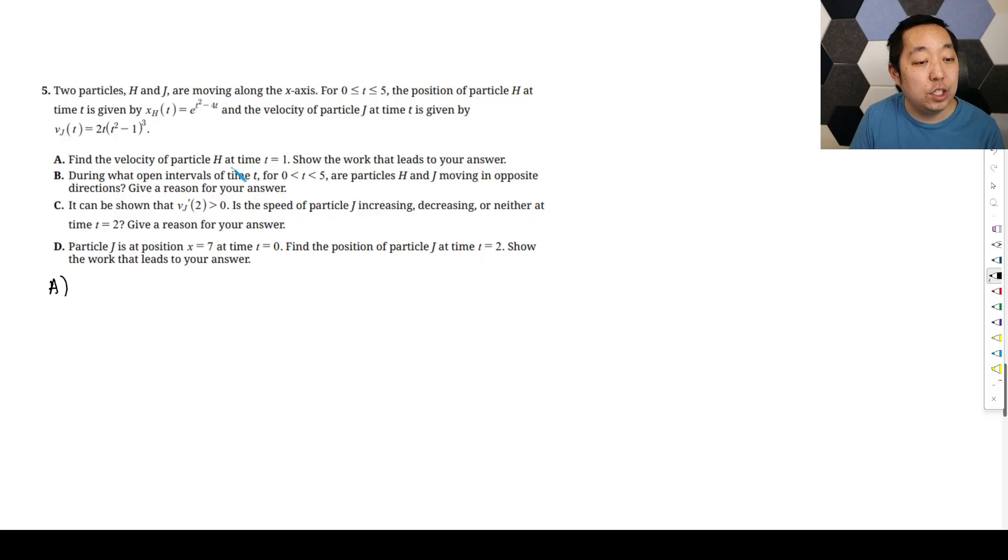Find the velocity of particle h at time 1. Show the work that leads to your answer. So the velocity of h is going to be the derivative of this. The exponential has an outer function, inner function, there's a chain rule. So it's e to the t squared minus 4t, then the derivative of the inner function is 2t minus 4. Then compute it at 1. That's e to the 1 minus 4 times 2 minus 4. That's going to be negative 2e to the negative 3. That's a perfectly fine answer.